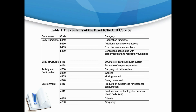Body functions involve respiratory functions, additional respiratory functions, exercise tolerance functions, and the sensation associated with cardiovascular and respiratory functions. Body structures involve the structure of the cardiovascular and respiratory system. Activity and participation involve carrying out daily routine, walking, moving around and doing housework. The environment involves products and substances for personal consumption, products and technology for personal use in daily living, and climate and air quality.